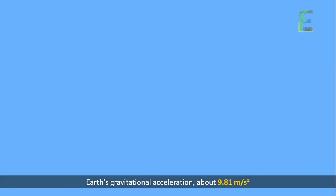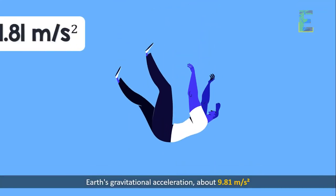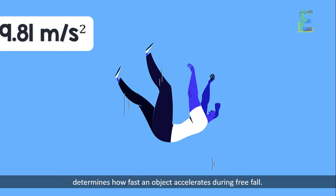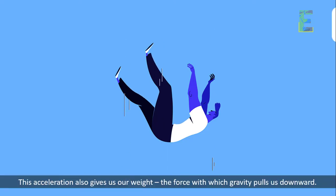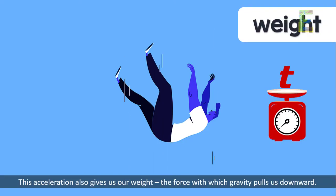Earth's gravitational acceleration, about 9.81 meters per square second, determines how fast an object accelerates during free fall. This acceleration also gives us our weight, the force with which gravity pulls us downward.